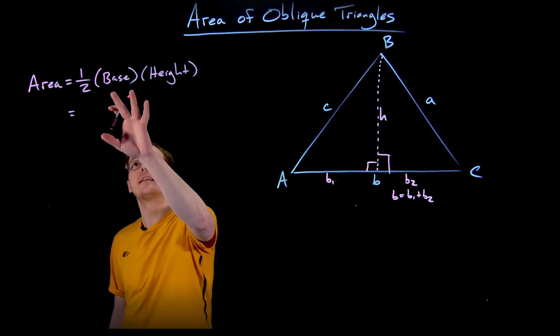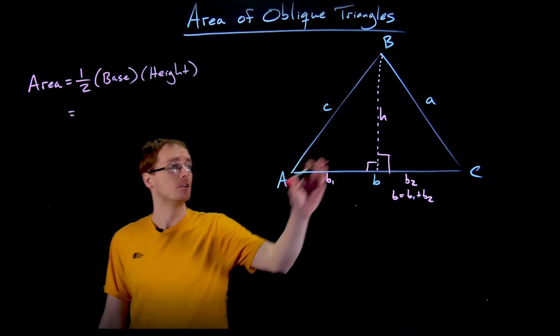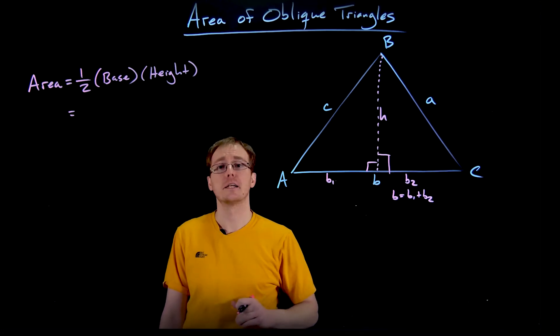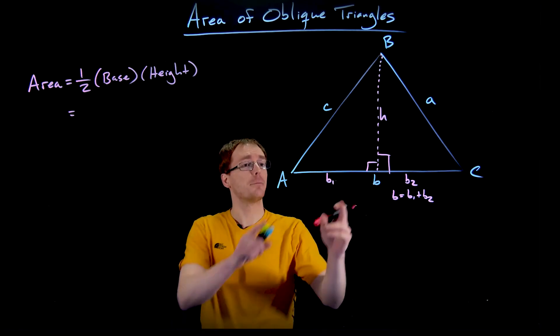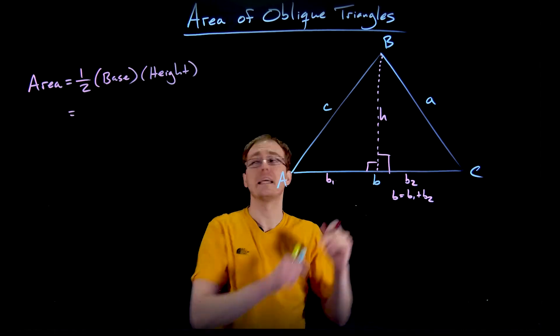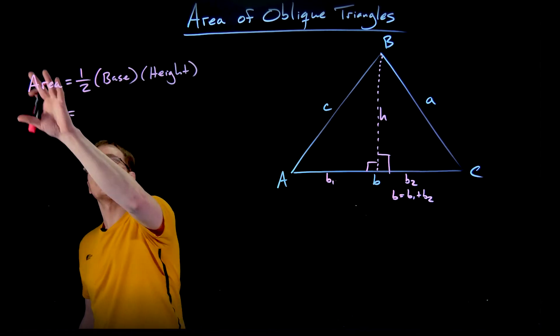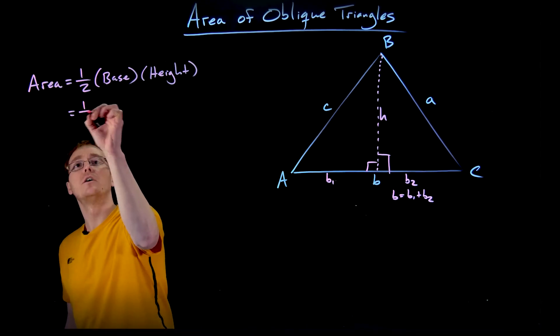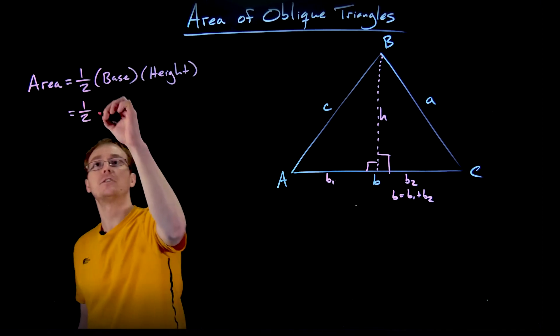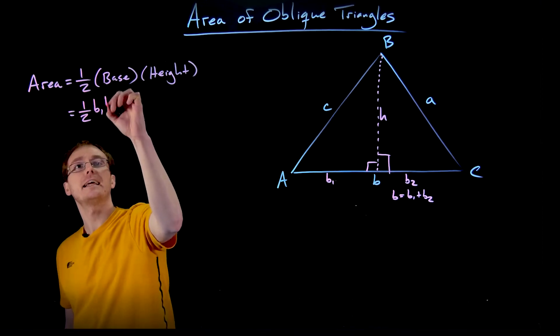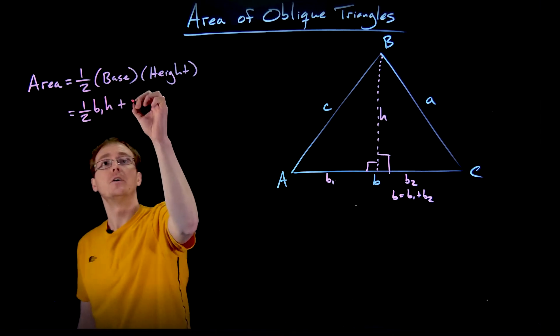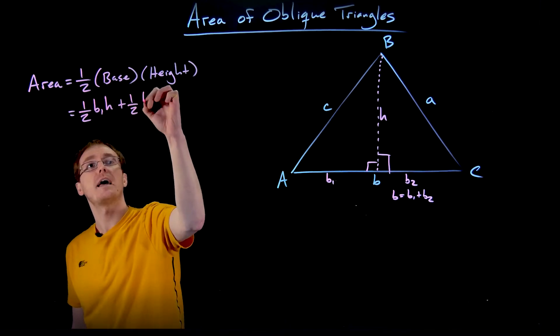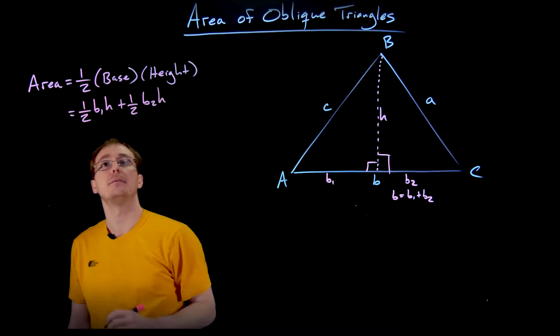Let's go ahead and apply this right triangle area formula to both of our interior smaller right triangles. Both of these right triangles are going to have a height of H and their bases are going to be B1 and B2 respectively. So we get the total area of our triangle. We have to do one half the first base B1 times the height H and add to that the area of our second triangle, which is going to be given by the expression one half B2 times H.